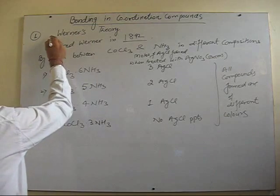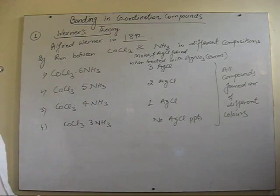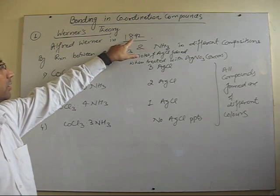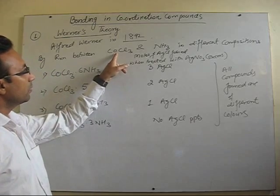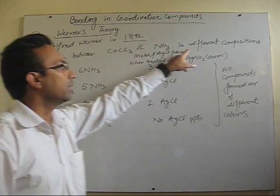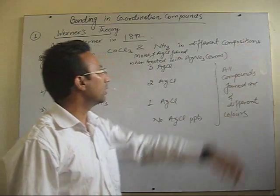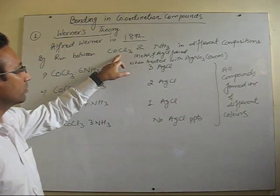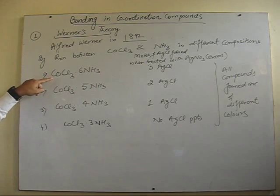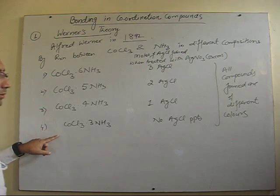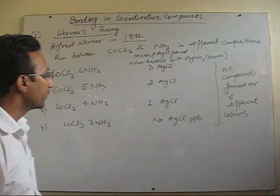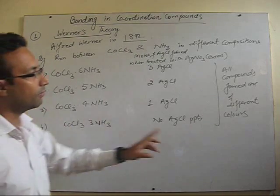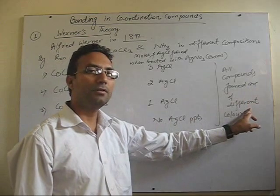The first attempt to find the structure of coordination compounds is Werner's theory. Alfred Werner in 1892 made many different compounds by the reaction between cobalt chloride and ammonia in different compositions. These different compounds have different molecular formulas formed by varying compositions of cobalt chloride and ammonia, and all these compounds were found to be of different colors.